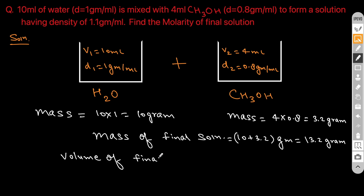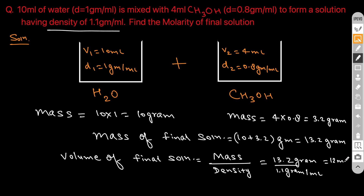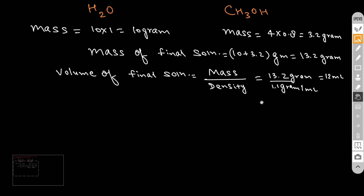The volume of the final solution is simply mass divided by density. Mass is 13.2 grams and the density of the final solution is given as 1.1 gram per mL. So 13.2 grams divided by 1.1 gram per mL comes out to be 12 milliliters — that is the volume of the final solution.